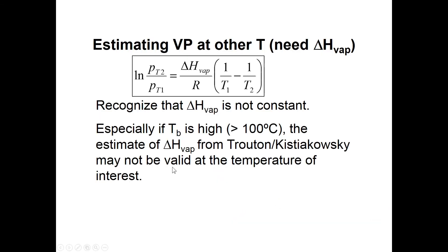It's not until you get to things like phenol and benzyl alcohol — which are very good hydrogen bond donors and acceptors — that the delta S of vaporization becomes quite large. Once you know delta H of vaporization, you can use it to predict vapor pressure at other temperatures. But if your boiling point is way above the ambient temperature range of 0 to 40 degrees Celsius, you'll have extrapolation error, introducing a lot of uncertainty. Trouton's Rule is a very crude estimation technique.